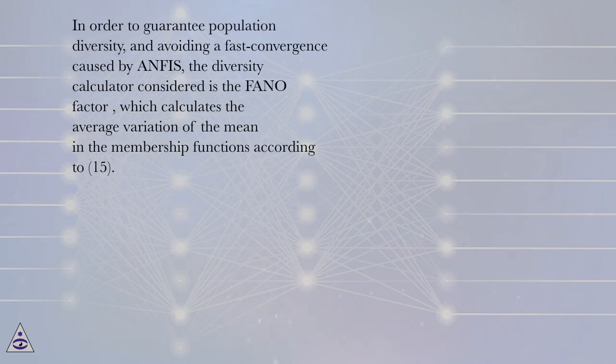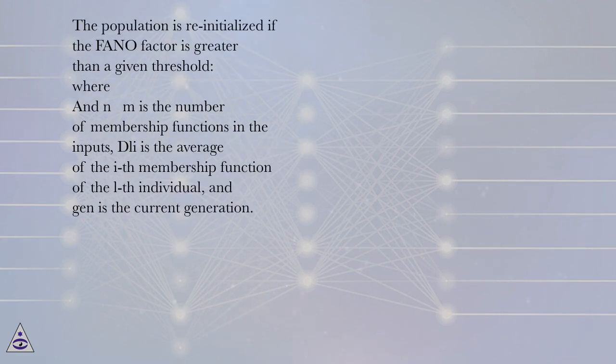In order to guarantee population diversity and avoid fast convergence caused by ANFIS, the diversity calculator considered is the FONO factor, which calculates the average variation of the mean in the membership functions according to equation 15. The population is re-initialized if the FONO factor is greater than a given threshold.